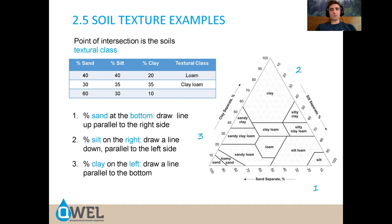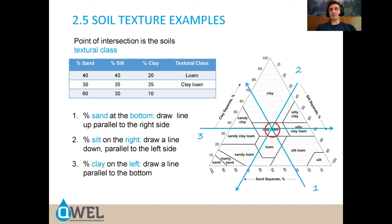Another example: 30% sand, 35% silt, and 35% clay. Following the lines on the triangle, we find where they cross and verify that the third category — clay at 35% — confirms our reading. That places us in the clay loam category. What changed? We went from 20% clay to 35% clay, and that brought us up from loam to clay loam.